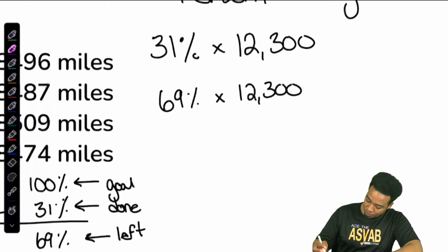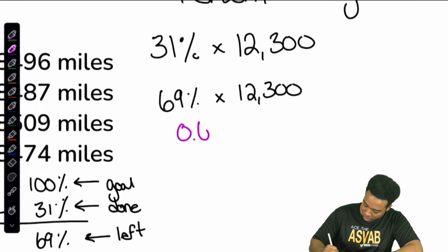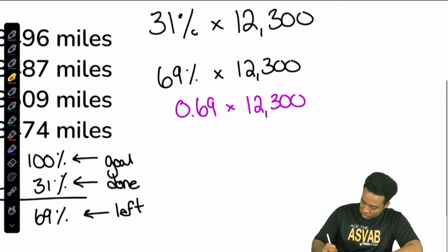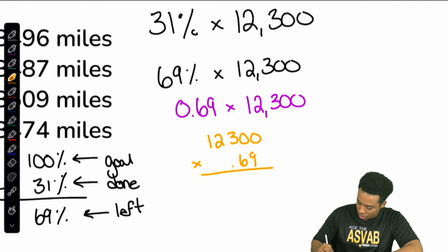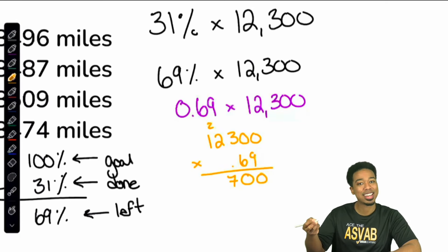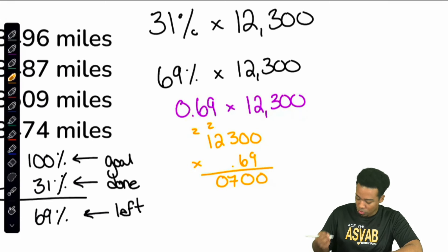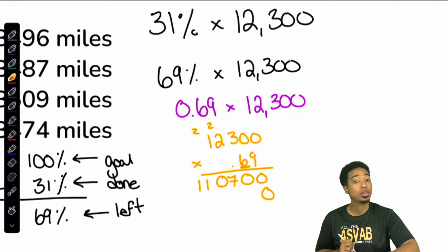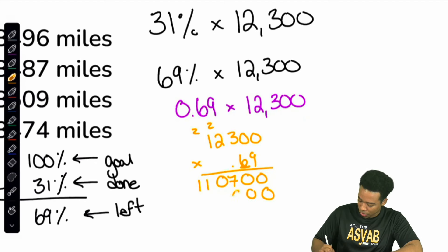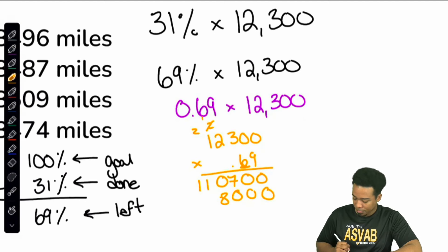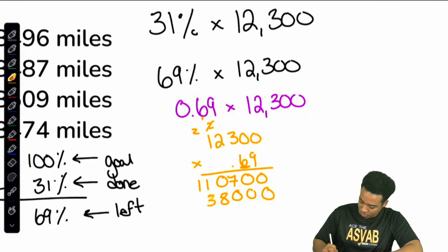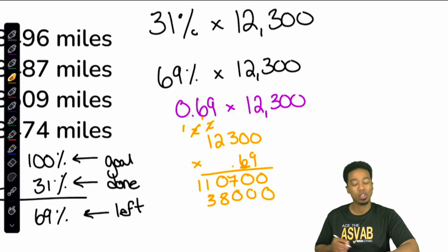So let's go ahead and solve this now. If we turn that percent to a decimal, that'll be 0.69 multiplied by 12,300. So: 12,300 multiplied by 0.69. 0 times 9 is 0. 3 times 9 is 27. 2 times 9 is 18, carry the 2 is 20. 1 times 9 is 9 plus 2 — that's 11. Next, put a 0 for that 6 we're about to calculate with. 0 times 6 is 0. 3 times 6 is 18. 2 times 6 is 12, carry the 1 is 13. 1 times 6 is 6 plus 1 is 7.